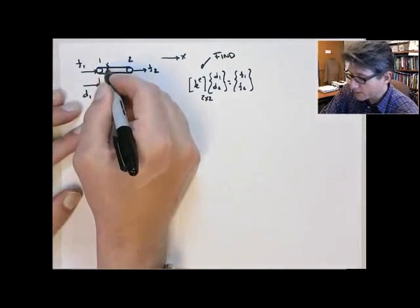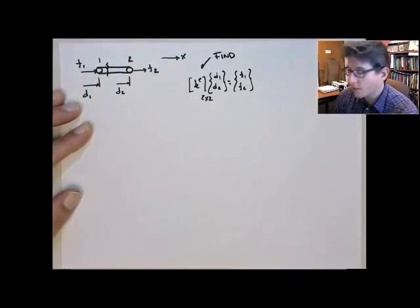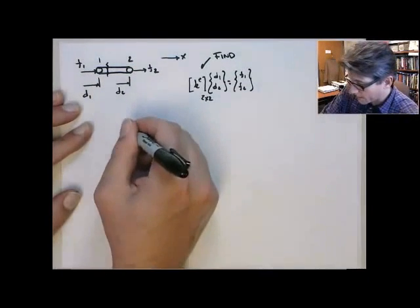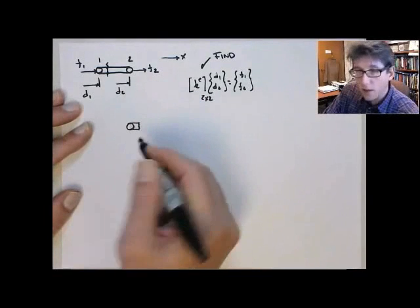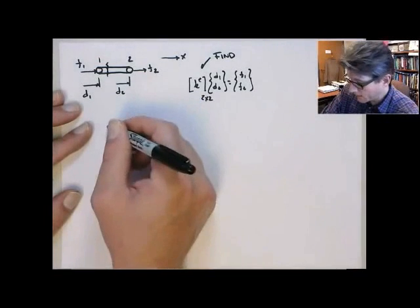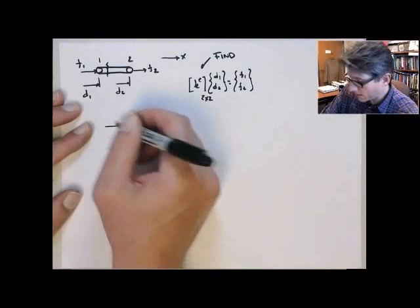We're going to consider a little section just to the right of node one. So if I redraw that, this is node one. Here's a little bit of the section just to the right.